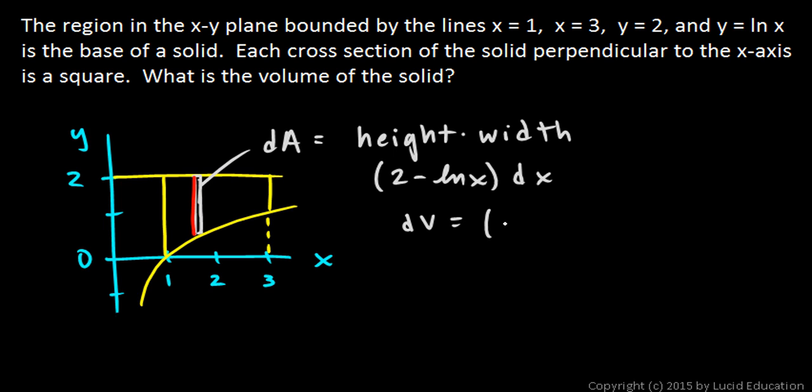So dV will be that squared: 2 minus ln x squared, times dx.